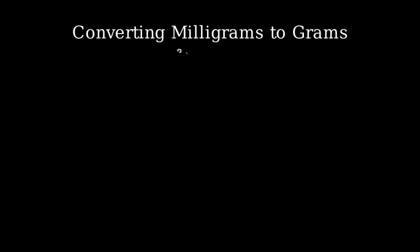Let's learn how to convert 3,500 milligrams to grams. This is a common conversion in the metric system. The key is the conversion factor: one gram equals 1,000 milligrams.